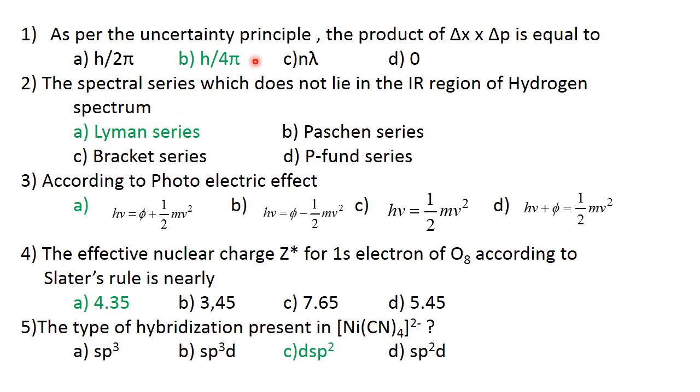Question number 1: As per the uncertainty principle, the product of delta X into delta P is equal to answer B, H by 4 pi. The correct answer is B.